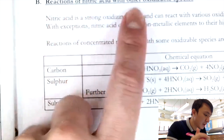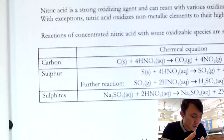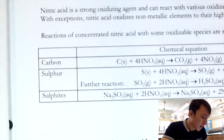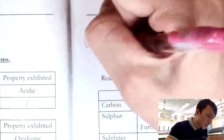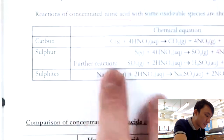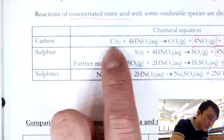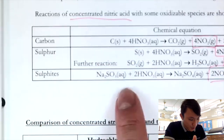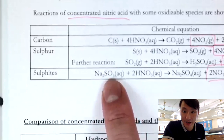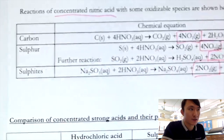For other reactions of concentrated HNO₃ with oxidizable substances — such as carbon, sulfur, and sulfite — all produce NO₂. Carbon and sulfur are oxidized to CO₂ and SO₂ respectively. Sulfite, being a common reducing agent, is oxidized to sulfate. These don't need to be memorized in detail, but you should know such reactions exist.